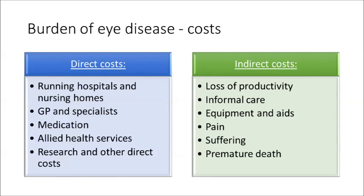GPs and specialists, as well as medication, are considered a direct cost — both prescription and other types of medication — along with allied health services, research, and other direct costs, for example, administrative support to run the services.